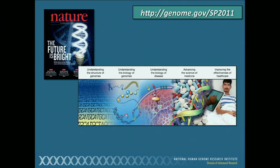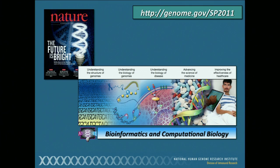Genomics and bioinformatics go hand in hand with one another, and this sentiment is best illustrated by this figure from NHGRI's current strategic plan, showing the spectrum of genomic-based research going from understanding the structure of genomes, understanding the biology encoded by those genomes, moving on to disease, advancing the science of medicine, and improving the effectiveness of healthcare. Our ability to work across this entire spectrum depends in large part on our ability to use computational approaches to analyze the data generated from whole genome sequencing efforts, genome-wide association studies, clinical sequencing efforts, and pharmacogenomics studies.